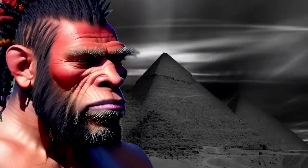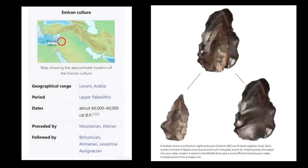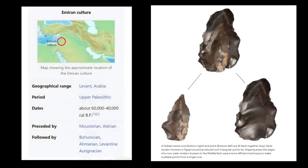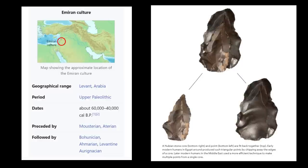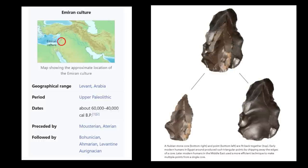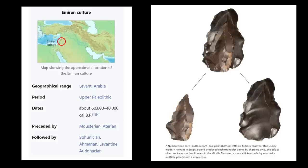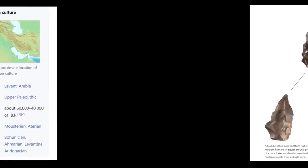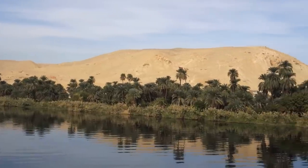Paleoanthropologist Chris Stringer of the Natural History Museum in London believes the Arabian region was not just a route to somewhere else, as it has often been considered in various dispersal scenarios. For early modern humans and possibly Neanderthals as well, it was occasionally a major location in and of itself. An extremely significant invention that came about during this time was the bow and arrow. The bow was the first such piece of equipment to store potential energy.